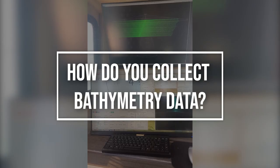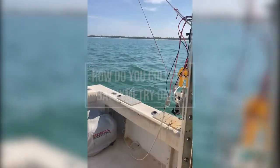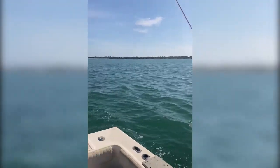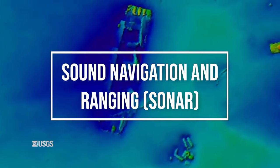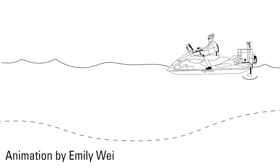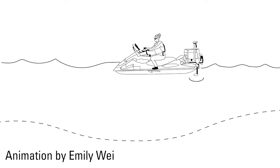How do you collect bathymetry data? Measuring water depth is not a new concept, but the way we do it has evolved over time. Historically, scientists would lower a lead weight attached to a rope over the side of a vessel to record the depth of water. Today, we use active sonar, or sound navigation and ranging. A transducer emits a pulse of sound into the water column, which then bounces off the seafloor and returns to the transducer, just like an echo. The time it takes for the sound to travel through the water column is recorded and then calculated to provide a depth measurement.